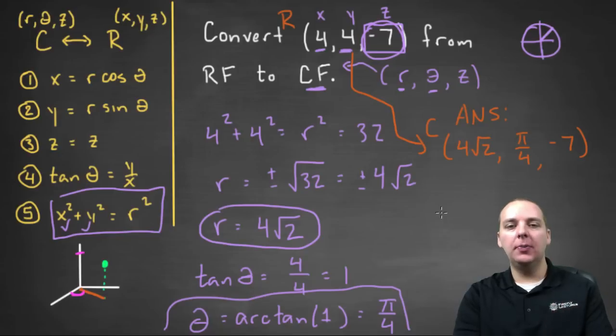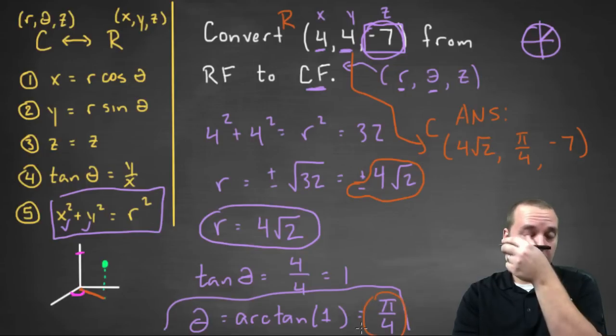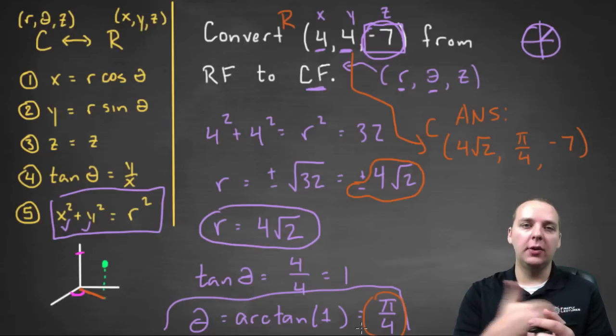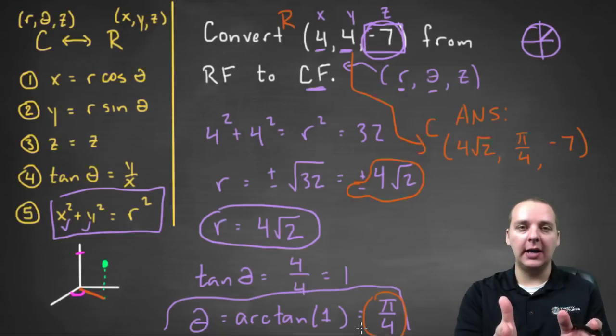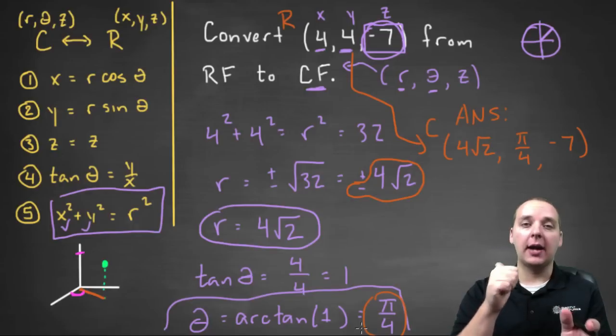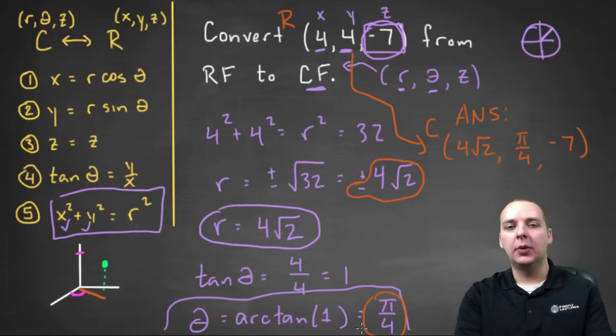Now a quick little side note. If we had earlier had chosen negative four root two, as opposed to positive, we would not have wanted to choose pi over four, because that's in the first quadrant. If we chose the negative R value, then we would have wanted to choose five pi over four, the angle in the third quadrant, because we would face our body that direction, and if the R value was negative, it would shoot backwards, back into the first quadrant again, like we want it to be, since the X and the Y were four, four.